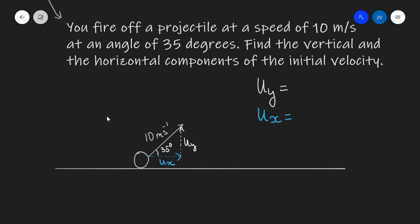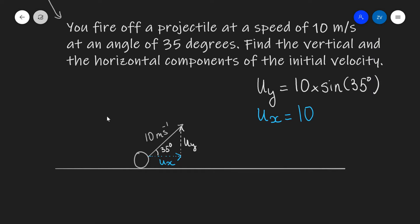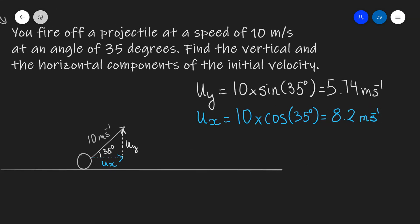Due to trigonometry, our vertical component u_y will be equal to our hypotenuse, which is 10, multiplied by the sine of the angle, which is 35 degrees. Our horizontal component u_x will be equal to our hypotenuse, which is 10, times the cosine of 35 degrees. Plugging those values into a calculator, we get the vertical initial velocity to be 5.74 meters per second and the horizontal initial velocity to be 8.2 meters per second.